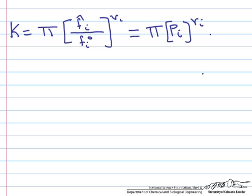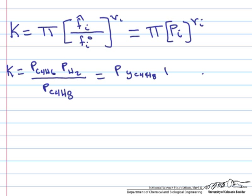So if we just do this out, K is equal to the partial pressure for this equation of the products over reactants. So P of C4H6 times the partial pressure of H2 over the partial pressure of C4H8. So if we just substitute in the definition of the partial pressure, that the partial pressure is equal to the total pressure times the mole fraction, this should just be equal to the total pressure times YC4H6 times the total pressure times YH2 over the total pressure times YC4H8.